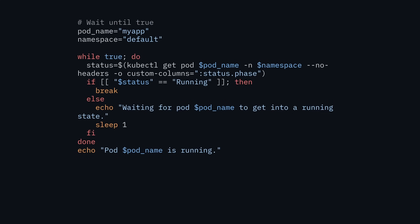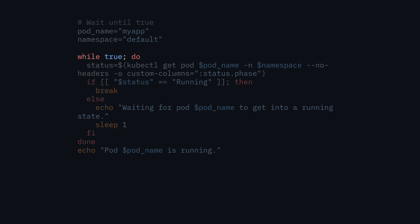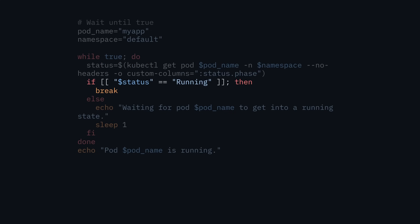The main use case I find for while loops is a wait-until-true pattern. For example, after deploying an application to a Kubernetes cluster, I wait until it's in a running state. Using an infinite loop — while true — I save the pod status in a subshell each iteration. When the status equals 'running' I break out of the loop. Otherwise the else block prints a log message and calls sleep to pause before checking again.